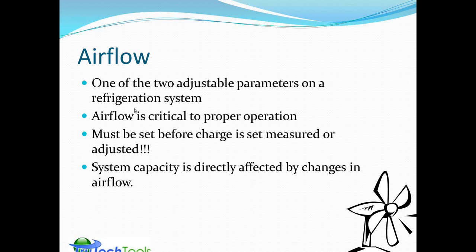Airflow is one of the two adjustable parameters on an air conditioning or refrigeration system. We all realize proper airflow is critical to getting conditioned air to the space. To actually remove humidity, drop temperature, or increase temperature, you have to have the proper CFM flowing through the system. In an air conditioning system, airflow must be measured, set, and adjusted before you set the refrigerant charge — if you don't set airflow first and you're adjusting charge, you're wandering down an aimless path.